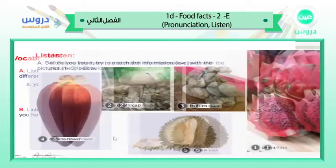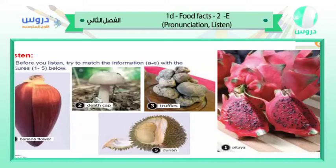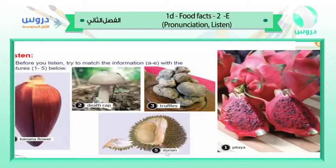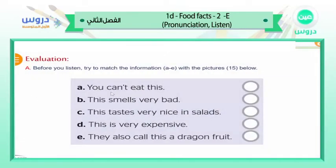Let's move to the next section — listening. Before you listen, try to match the information from A to E with the pictures numbered one to five. We have: number one, pitaya; number two, death cap; number three, truffles; number four, banana flower; number five, durian. Try to guess and write the letters while I read them.